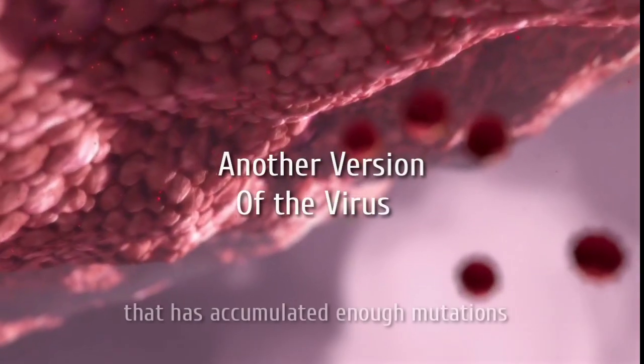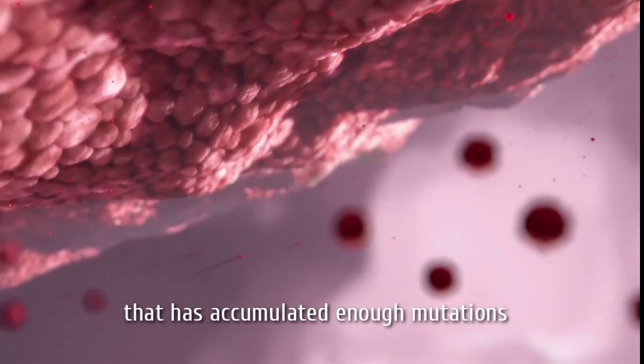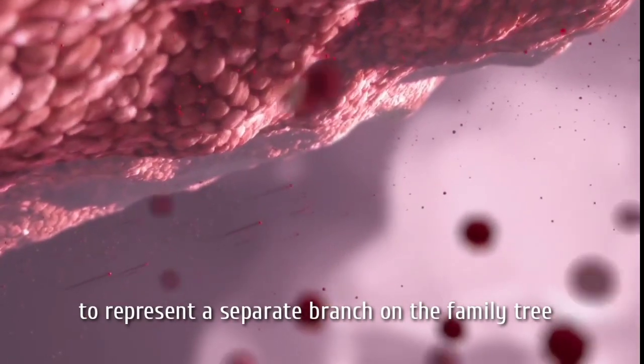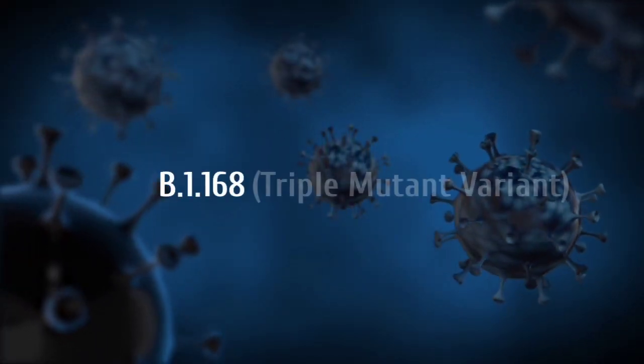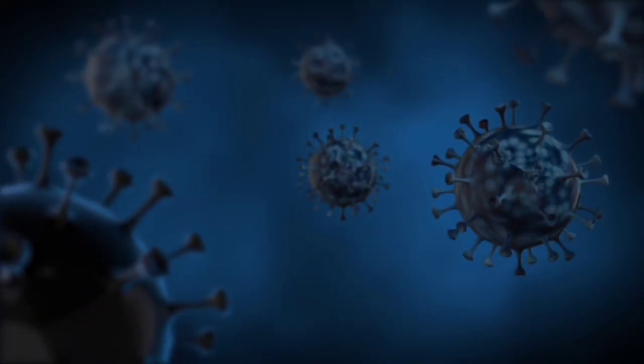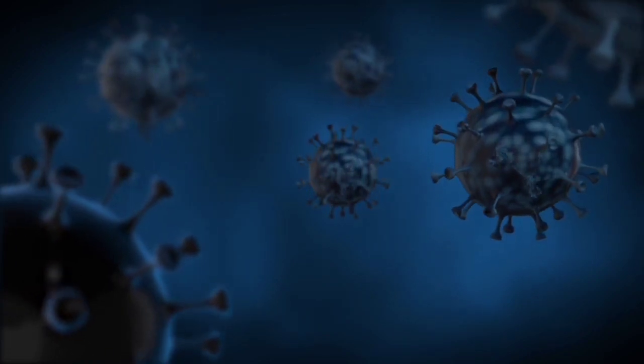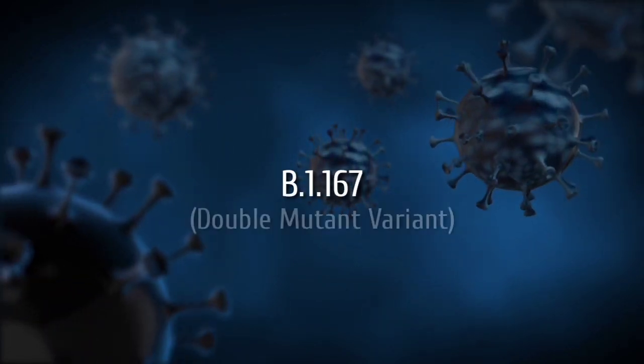A variant is a version of the virus that has accumulated enough mutations to represent a separate branch on the family tree. B.1.618 is also a variant. Double mutant is also a variant called B.1.617.